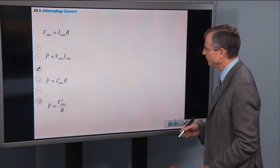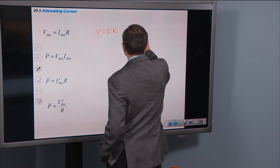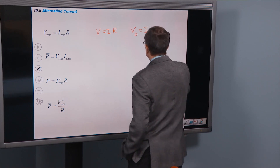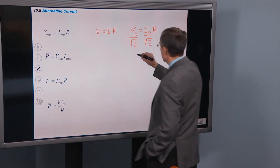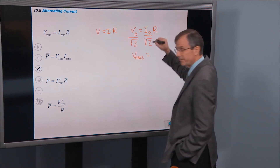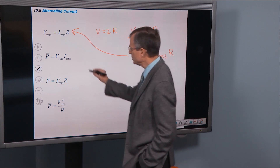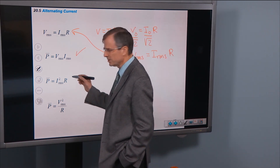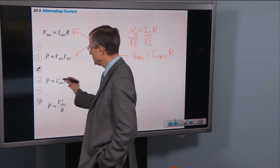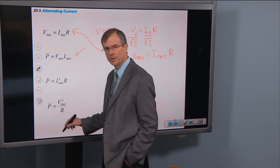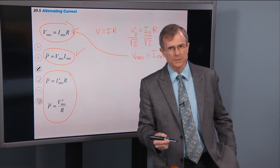Here are some additional relationships. You know V = IR, therefore V₀ = I₀R for peak values. Dividing by √2 gives V_RMS = I_RMS × R. You can similarly derive P = I_RMS² × R and P = V_RMS² / R — these come directly from V = IR and P = IV, just as before.